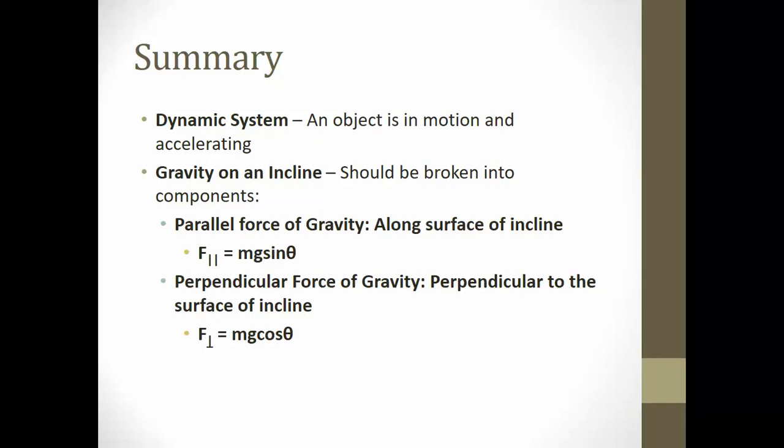In summary: a dynamic system is an object that is in motion and accelerating, with different properties than equilibrium systems. For gravity on an incline, we break it into components: the parallel force along the surface equals mg·sin(θ), and the perpendicular force of gravity perpendicular to the surface equals mg·cos(θ).